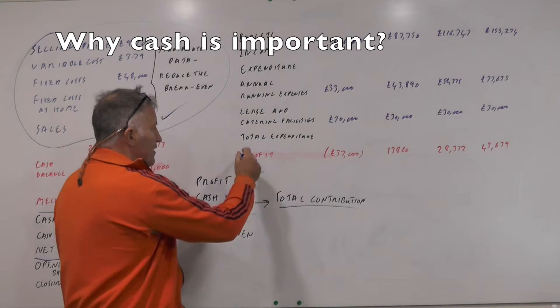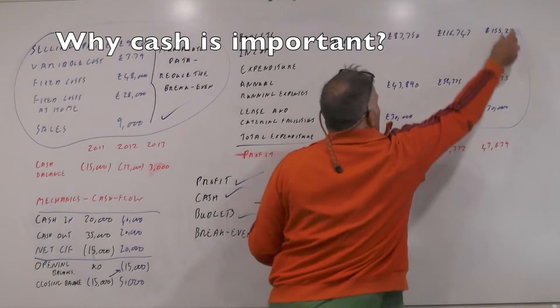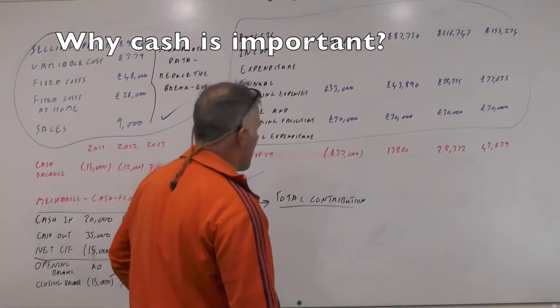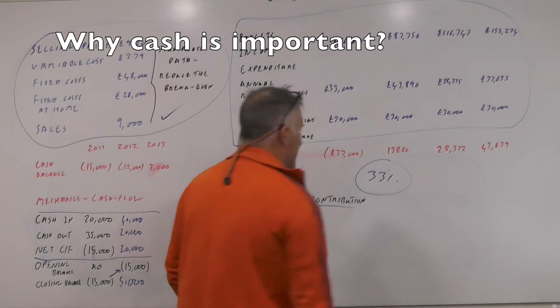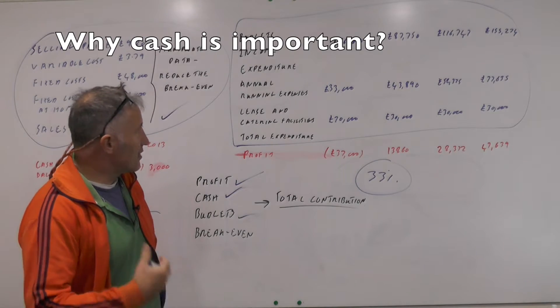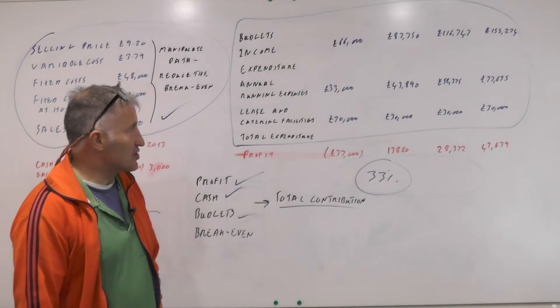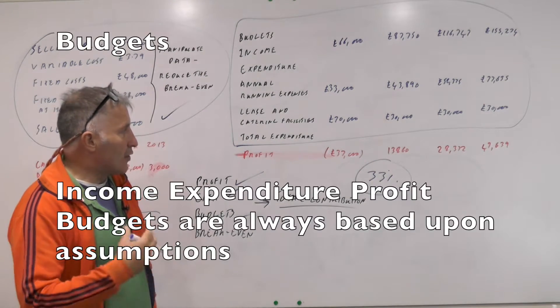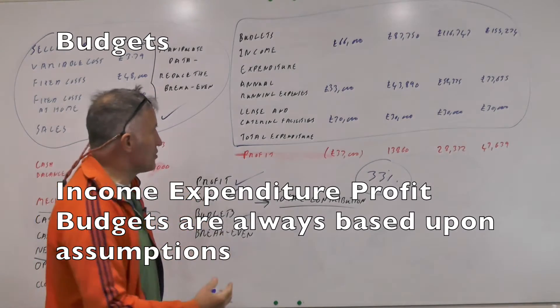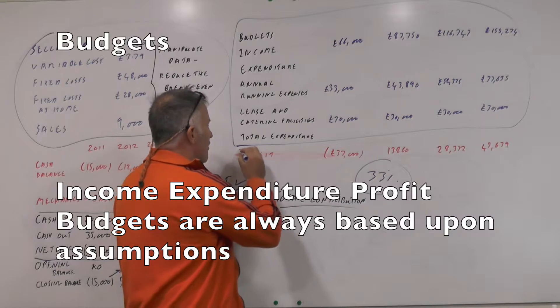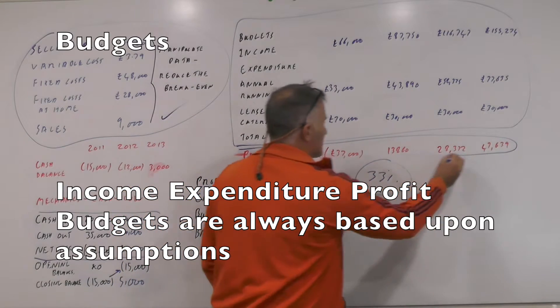They gave us this information on the budgets. It just appeared on the exam paper. It also appeared on the exam paper that the person in charge, someone called Max, said that the income would increase by 33 percent every single year. Now that's a pretty big assumption to make.